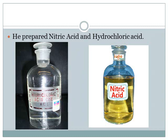Jabir ibn Hayyan prepared HNO3 (nitric acid) and HCl (hydrochloric acid). By mixing them in a 1:3 ratio — for example, 1 glass of acid to 3 glasses of water — he prepared a solution called aqua regia, which can dissolve silver and gold.